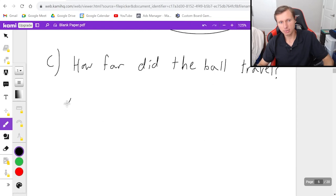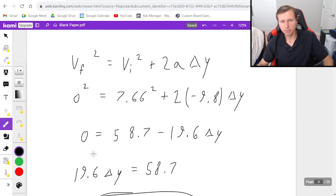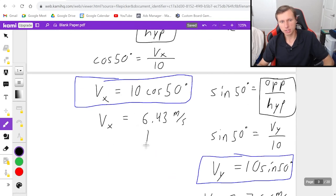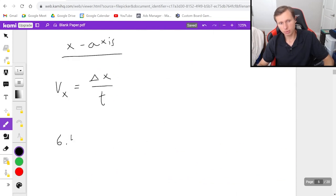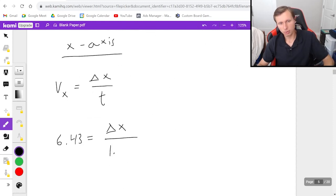So if I say for the x-axis, there's only one equation. It's vx equals delta x over t. I already know most of these variables. We said a while ago that vx was 6.43 when we used Sokotoa. So 6.43 equals delta x, which is the distance I'm solving for, divided by the time. We do know the time. It was the answer from the last problem, 1.56. So 1.56 goes in the denominator.